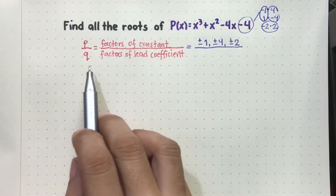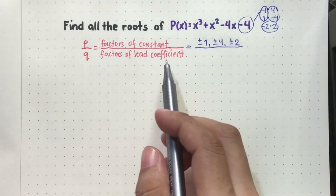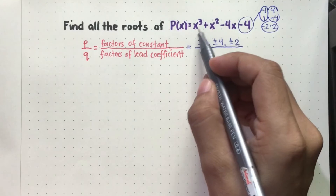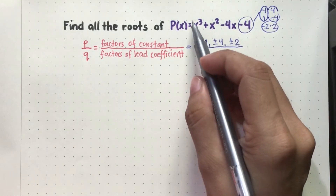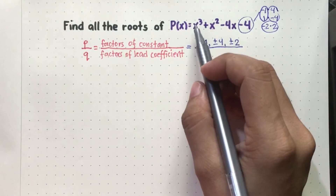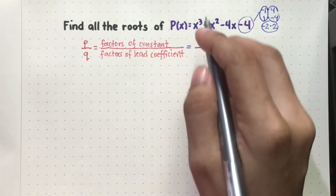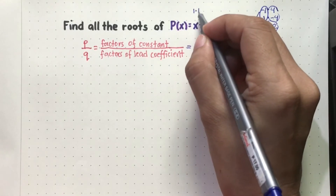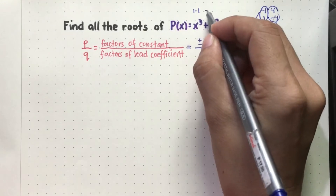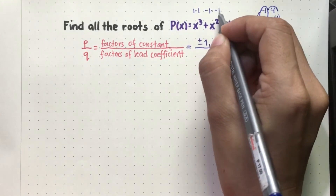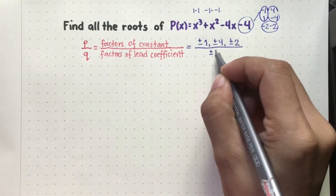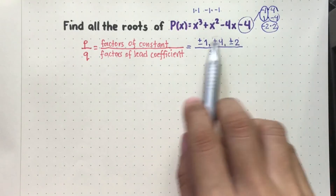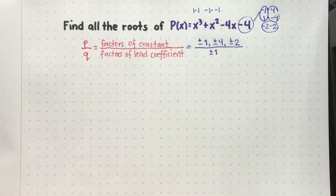Now for the denominator, which will come from the lead coefficient — so it comes from x cubed — and ang coefficient niya, hindi natin nakikita. Kapag ganun, ibig sabihin meron siyang 1 as the numerical coefficient. So ang factors ng 1, it can be 1 times 1 or negative 1 times negative 1. It means ang denominator natin ay magiging positive and negative 1.